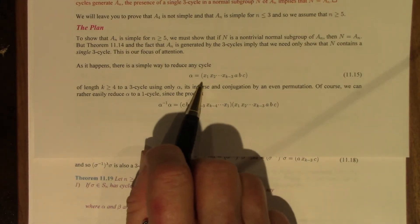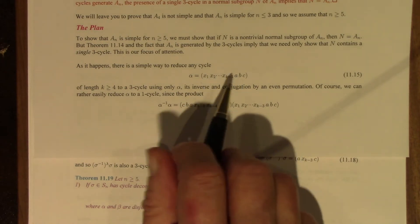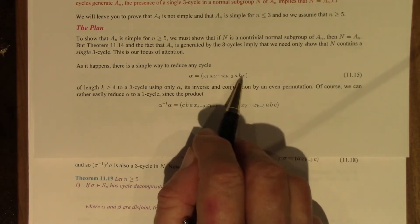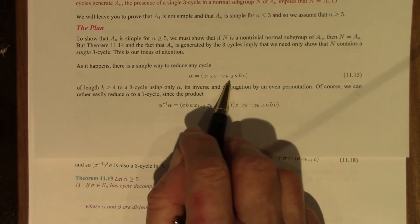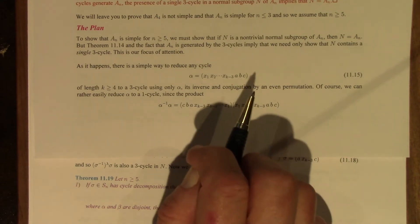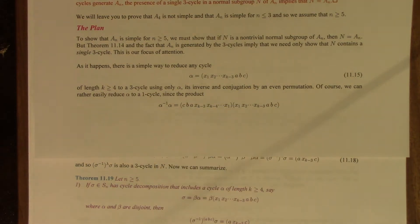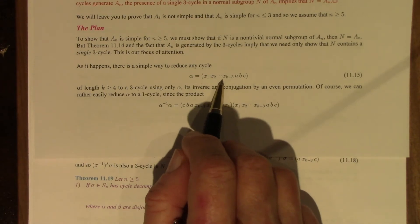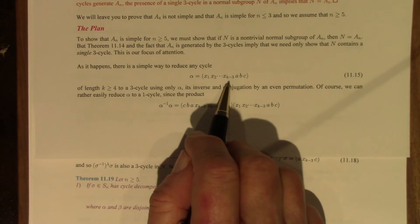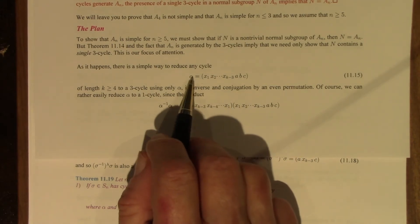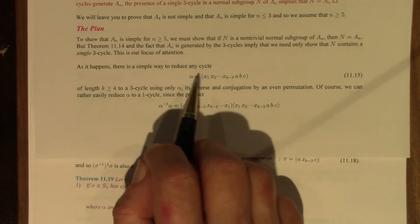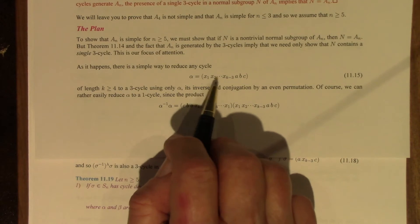Here is the crux of the proof. There is a simple way to reduce any cycle of length 4 or greater. Writing such a cycle as (a, b, c, x_1, ..., x_{k-3}), this has length k with k at least 4, meaning there's at least one x. There's a simple way to reduce any k-cycle, where k ≥ 4, to a 3-cycle, using only alpha itself, alpha inverse, and conjugation by an even permutation — so everything can take place in A_n.